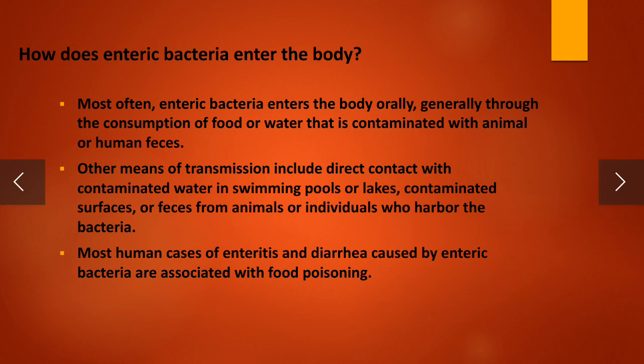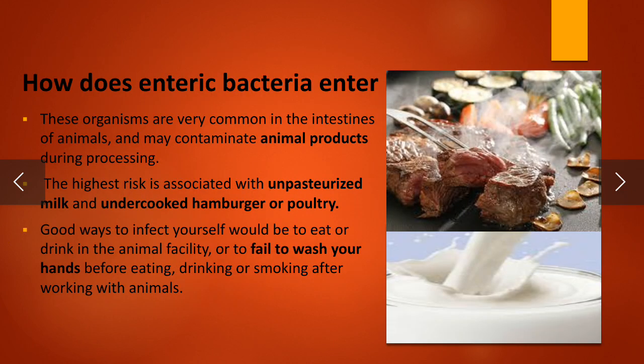Enteric bacteria enter the body orally, generally through the consumption of food or water that is contaminated with animal or human feces. Other means of transmission include direct contact with contaminated water in swimming pools or lakes, contaminated surfaces, or feces from animals or individuals. Most human cases of enteric disease, for example diarrhea, caused by enteric bacteria are associated with food poisoning.